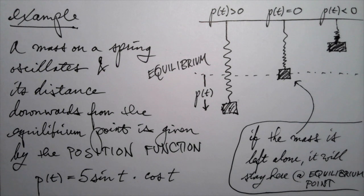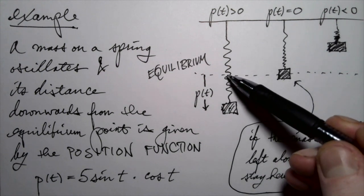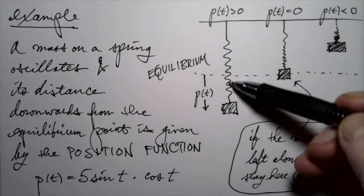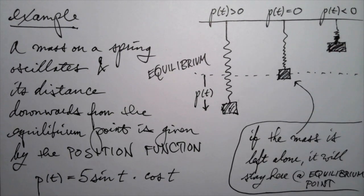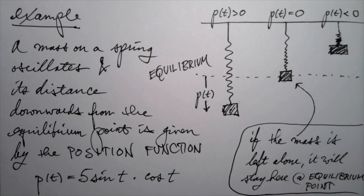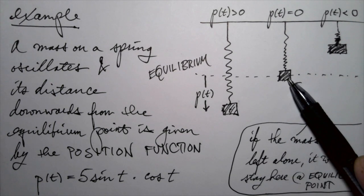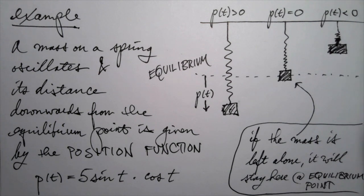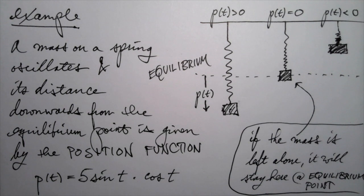At the beginning, at time t equals zero, the mass is suddenly thrust downward and then it begins to spring back and forth. In these three pictures I've illustrated what that looks like. Here we have a case where the downward distance from the equilibrium is positive. When the distance function is zero, you're exactly at the equilibrium point. If the position function is negative, you're above the equilibrium point — the spring is all scrunched up.